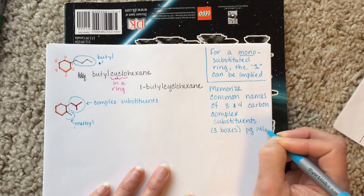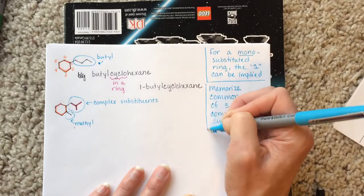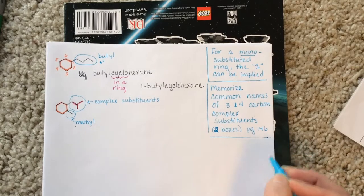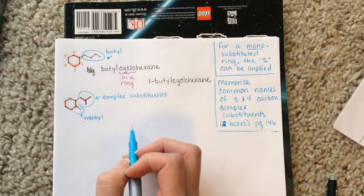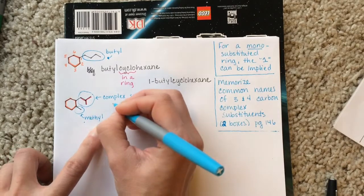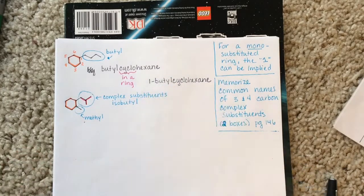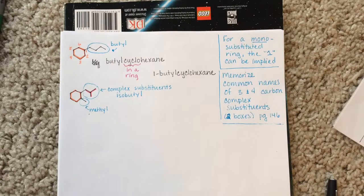You have to memorize the common names of the three- and four-carbon complex substituents. They are on page 146 in two boxes — one box has the three-carbon substituents and one box has the four-carbon substituents. There are also five-carbon substituents but I only need you to know the threes and fours. Complex substituents have common names and also IUPAC names. This particular substituent's common name is isobutyl. Its IUPAC name is more complicated, so we're not going to worry about that right now.